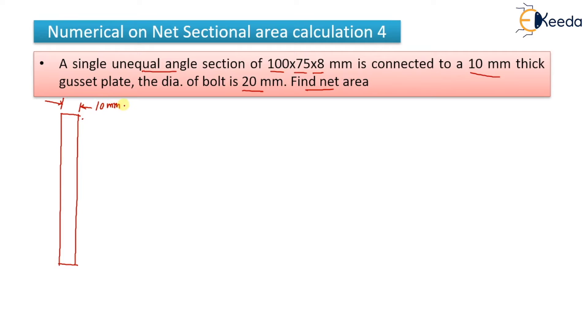This 10 mm thickness is not useful to us in the numerical. Then there is an angle which is connected to it and it is of 8 mm thickness. So I will draw it like this. It is connected like this and the bolt is also there. It is 20 mm diameter bolt. So I will draw a bolt here like this. A bolt is connected here and it is of how much diameter? It is 20 mm diameter that you have to remember. This one is your bolt.